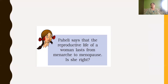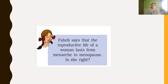The reproductive life of a woman lasts from menarche to menopause. Menarche is the first menstrual flow, occurring at the age of 10 to 15 years when puberty is attained. Menopause occurs at the age of 45 to 50 years when the menstrual flow stops. The period in between is called the reproductive life of women.